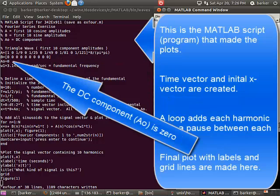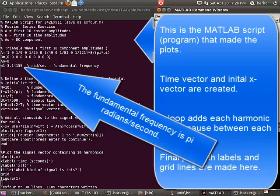The DC component, AO, is 0. The fundamental frequency is pi radians per second.